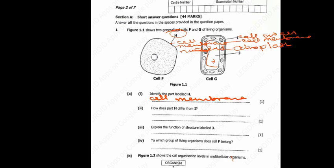Question 1a2 says how does part H differ from I. The best answer to use is: the main function of the cell membrane is to allow minerals and water to enter and come out of the cell. For the cell wall, the main function is for the structure of the cell and protection.